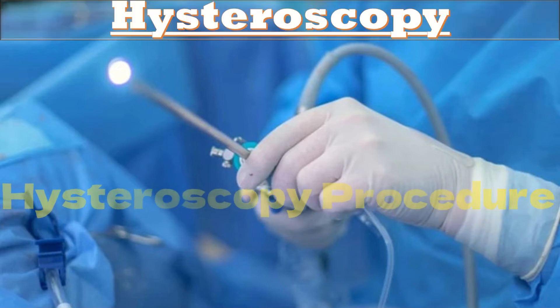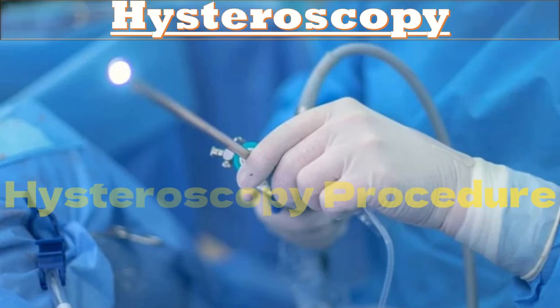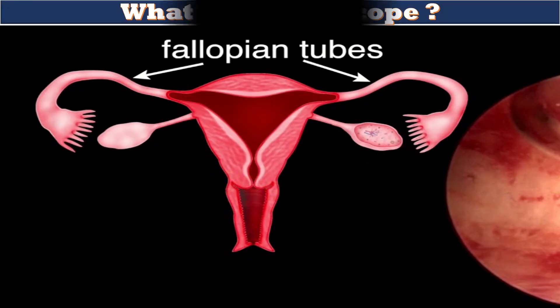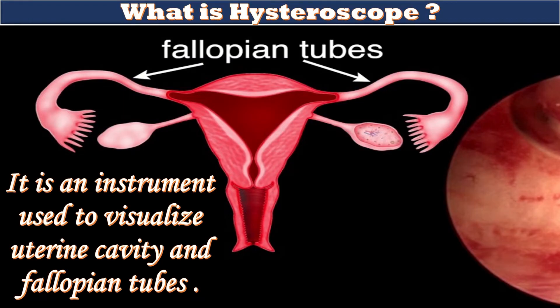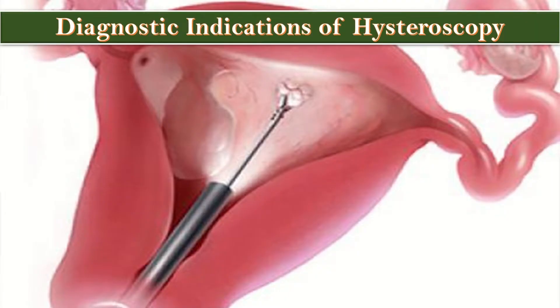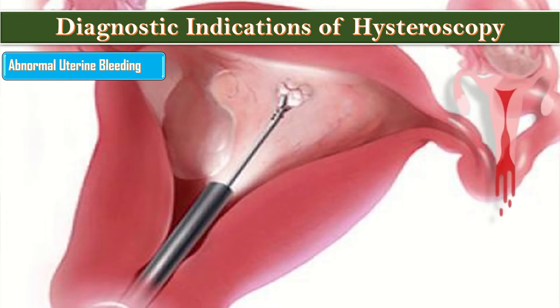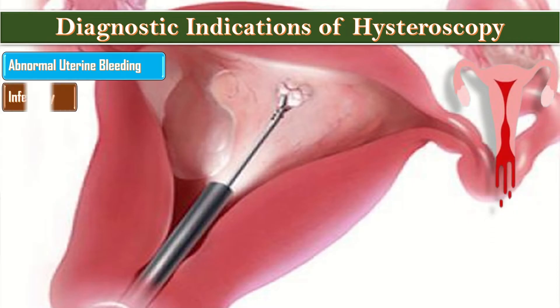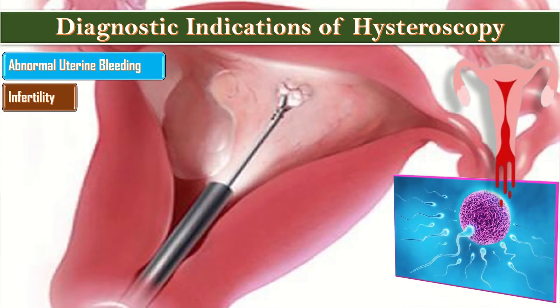The topic of our discussion today is hysteroscopy. A hysteroscope is an instrument used to visualize the uterine cavity and fallopian tubes. Hysteroscopy is a procedure in which the uterine cavity and the fallopian tubes are visualized by hysteroscope.